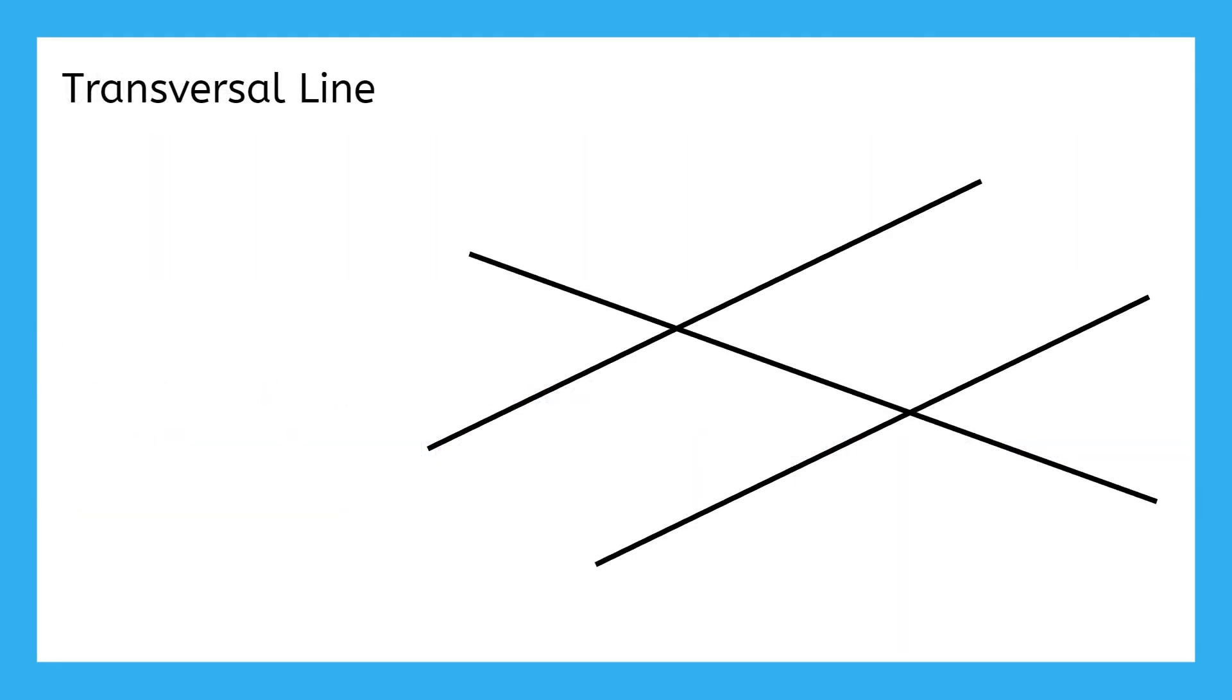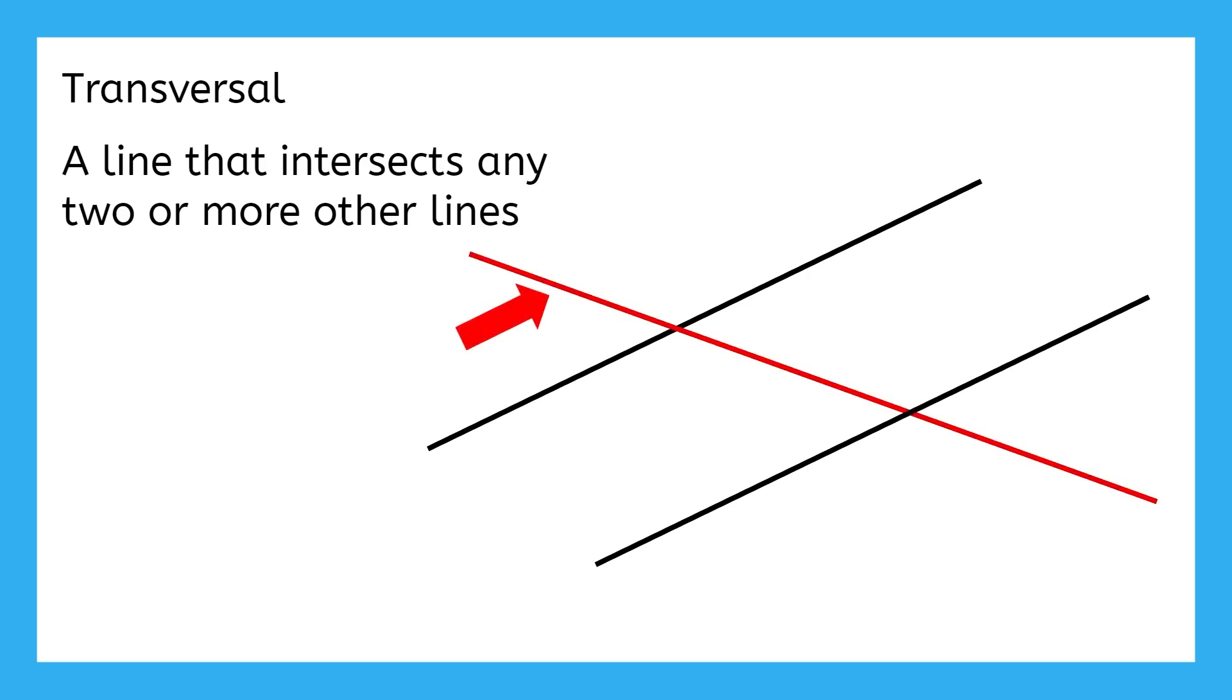I've been using the word transversal a lot, but chances are this is a new word for you. A transversal line is a line that intersects any two or more other lines. Mathematicians will often shorten the term transversal line to just transversal, like I've been already doing in this lesson. In our diagram here, this line would be a transversal because it's intersecting these two lines. We could draw infinitely many examples of transversals that go through these two lines. These are just a few of the different possibilities.